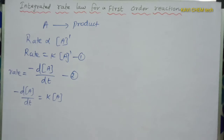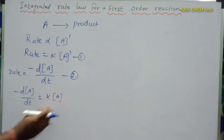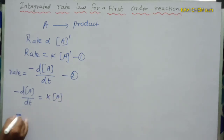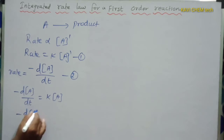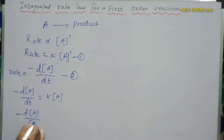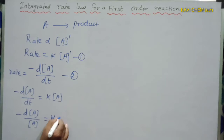Now I am going to rearrange this equation. Bringing the concentration of A to the left side, we get minus dA/[A] = K dt.